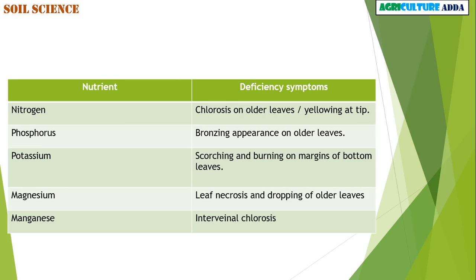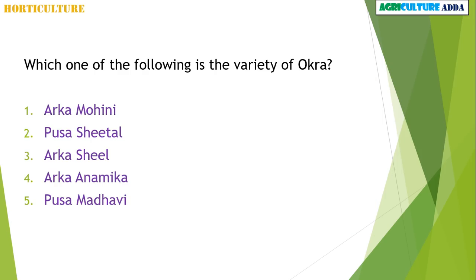Next, in horticulture, which one of the following is a variety of okra — Arca Mohini, Pusa Sheetal, Arca Seal, Arca Anamica, or Pusa Madhavi? The answer is Arca Anamica.